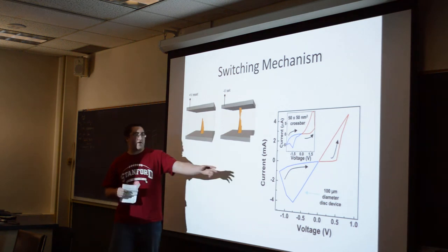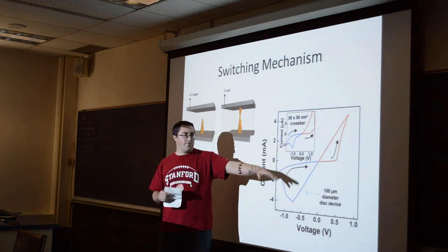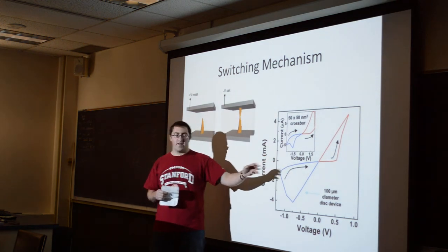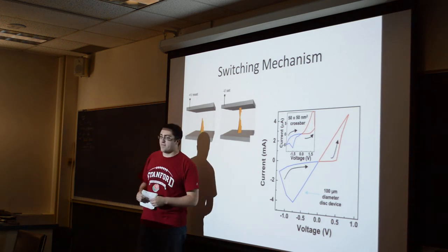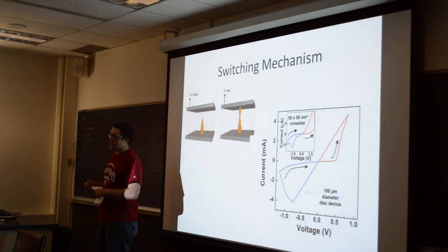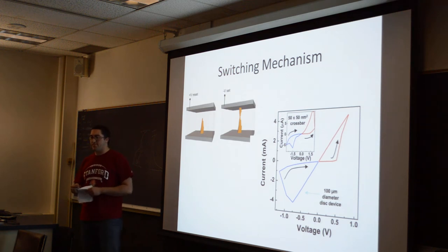This graph here shows, in red, the reset mode with the positive voltage and the positive current, and the blue is the set mode with the negative voltage and negative current. Because we can set and reset these cells, we have effectively either a one or a zero, and because of that, we can use these types of cells as memory cells.